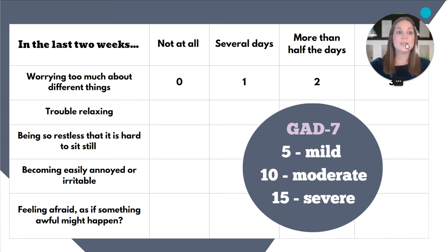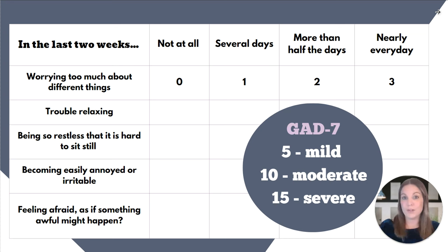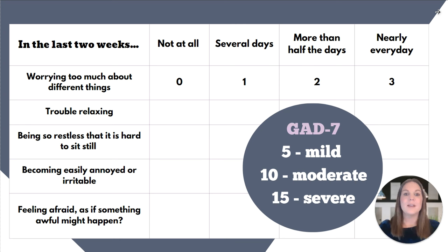If the GAD-2 is positive, we would ask the patient to complete the GAD-7, which includes five additional questions. This includes asking the patient if they feel they are worrying too much about different things, if they're having trouble relaxing, if they're being restless or irritable, and if they're feeling like something awful is about to happen. It is scored exactly the same way as the GAD-2 — each question is given a numerical score and then totaled. This total does include the two questions from the GAD-2.